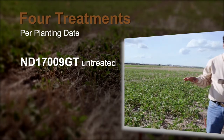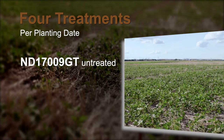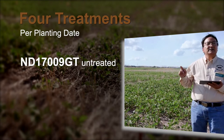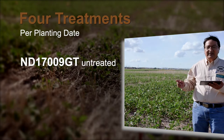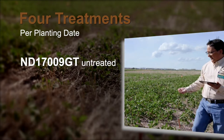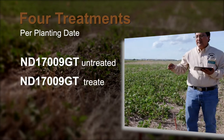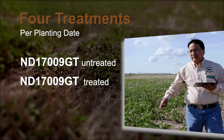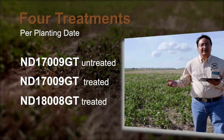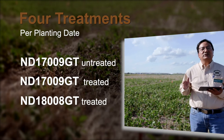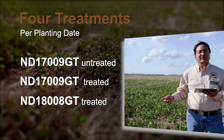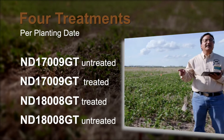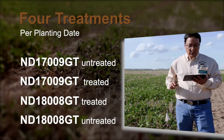This is the plot planted on day 1, which is May 2nd. The first plot is planted with variety 17009GT and this variety was not treated. The second plot is the same variety, but treated with a fungicide before planting. The third plot is the next variety, ND18008GT, treated with a fungicide before planting. And the fourth one is the same ND18008GT without seed treatment.